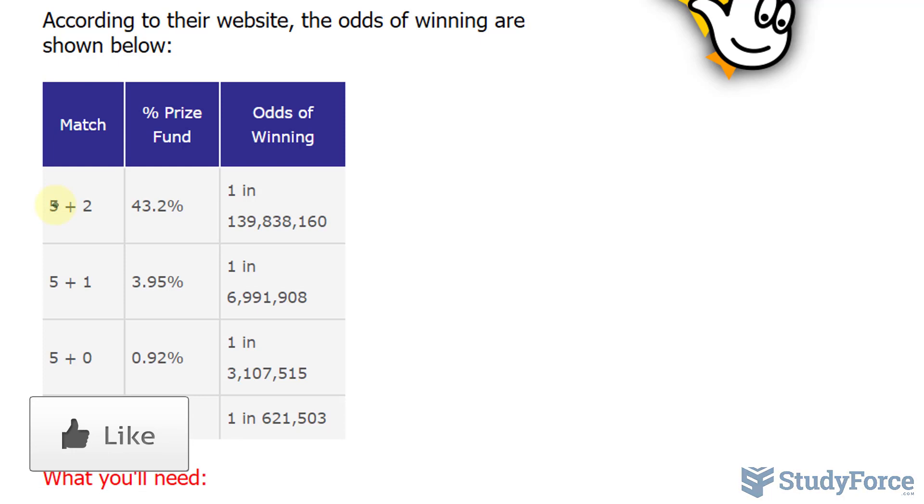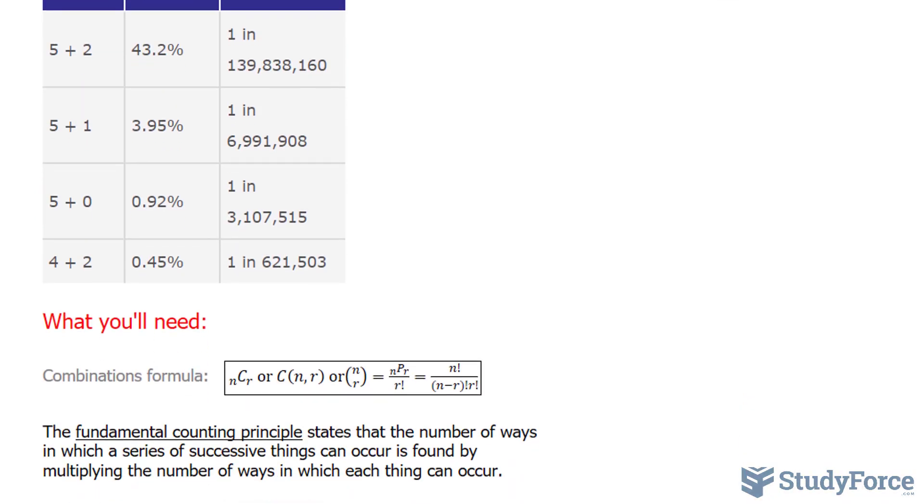What are the odds of winning 5 main numbers and 2 of those lucky numbers? To find the probability, we need to find the total number of combinations for picking 5 from the 50 and 2 from the 12. To do that, we have to use a special formula shown on your screen known as the combinations formula. The combinations formula consists of the letter N and the letter R. N represents the total number of balls, and R represents the amount that you select. So from our first pool of numbers, we have an N value of 50 and an R value of 5.